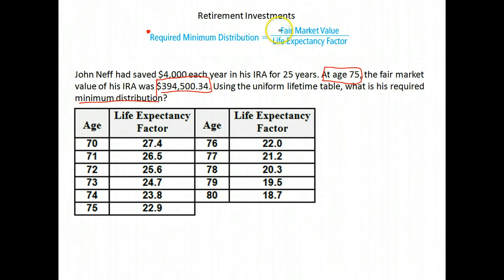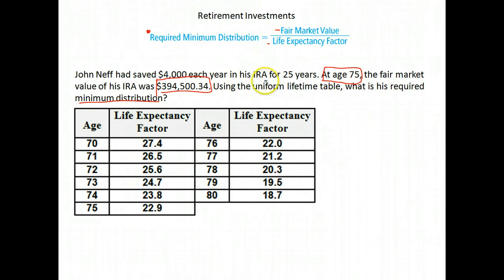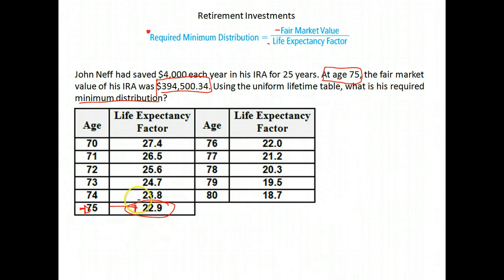We have our formula here. What we're going to do is take the market value of his IRA and divide it by his life expectancy factor. He is age 75, so we go down to age 75 in the table, and here is his life expectancy factor — it's 22.9.